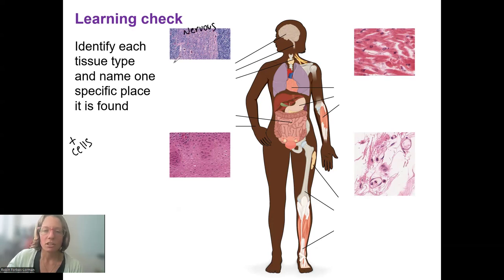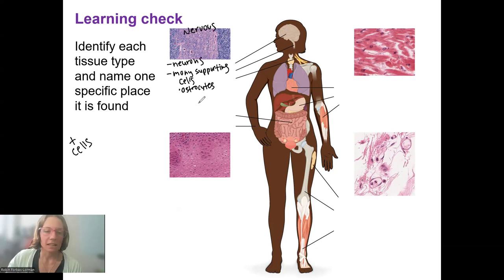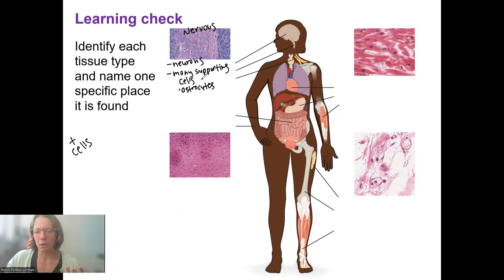Nervous tissue is going to contain neurons, as well as many supporting cells. We'll go into these later in the semester. One example is astrocytes — you may have heard of astrocytes — Schwann cells, and satellite cells are some examples. It's a diverse group of cells, about six total. Their function is either to send electrical signals or to support the other cells, largely.